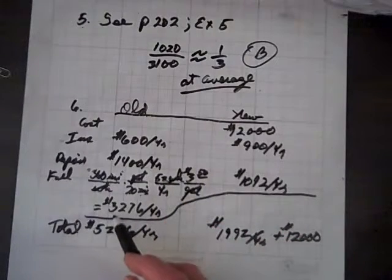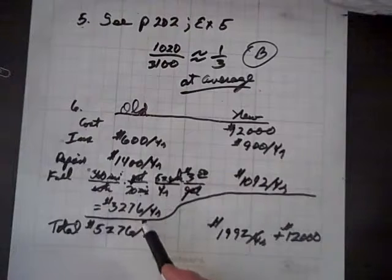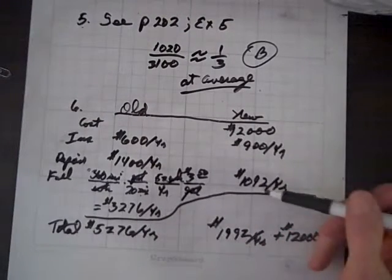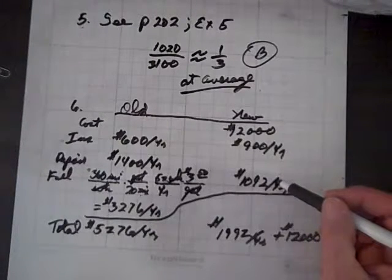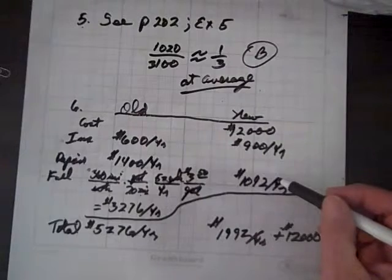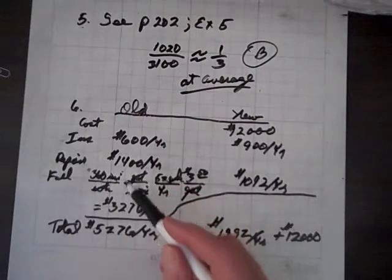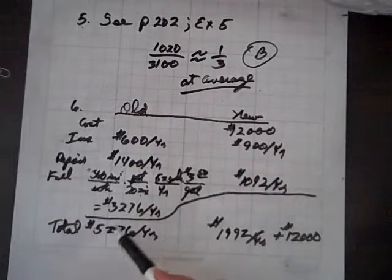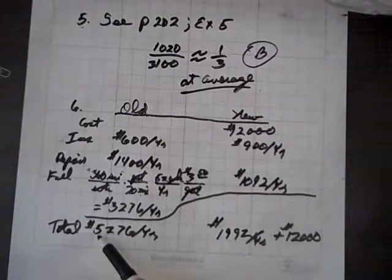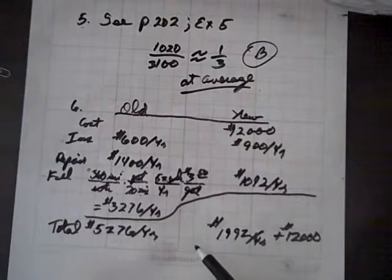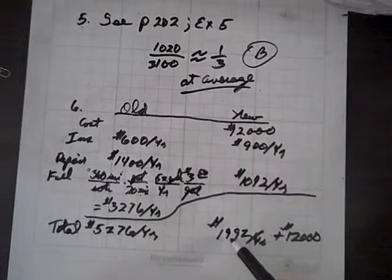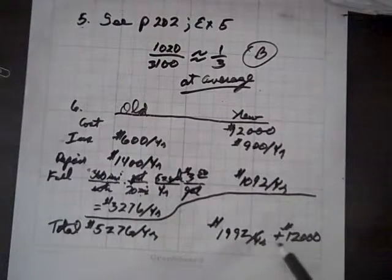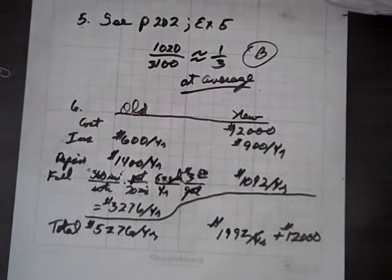And we're left with about $3,276 per year. Going through the same dimensional analysis for the new car, we get about $1,092 per year. So when you total up these expenses plus the gas for one year, the old car costs about $5,276, whereas the new car costs $1,992 per year, plus the $12,000 you paid for the new car.